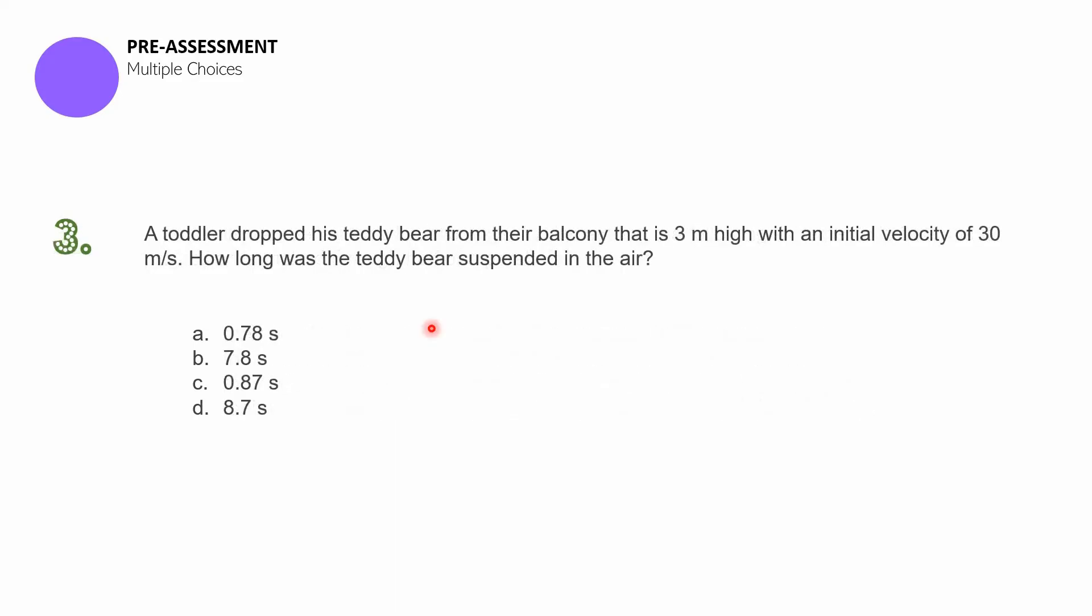Question number three. A toddler dropped his teddy bear from their balcony that is three meters high with an initial velocity of 30 meters per second. How long was the teddy bear suspended in the air? A. 0.78 seconds. B. 7.8 seconds. C. 0.87 seconds. D. 8.7 seconds.